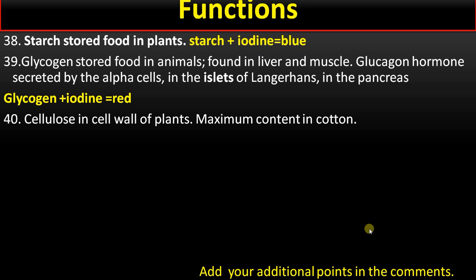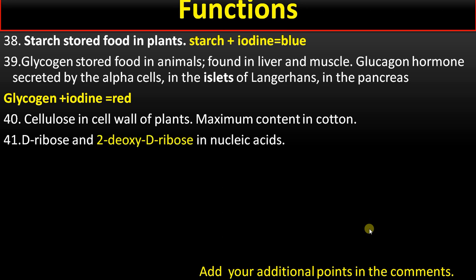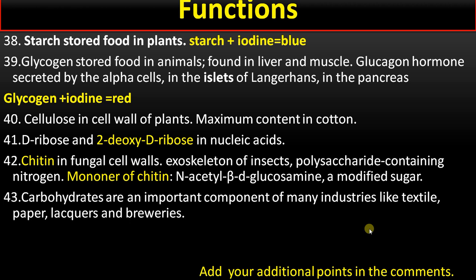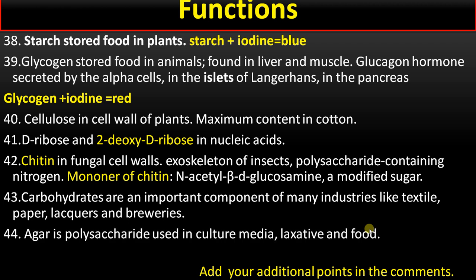Point number 40: cellulose is present in plant cell walls and is found in maximum concentration in cotton. Point number 41: D-ribose is found in RNA and 2-deoxyribose in DNA. Point number 42: chitin is a polysaccharide containing nitrogen found in fungal cell walls and the exoskeleton of insects; its monomer is N-acetylglucosamine. Point number 43: carbohydrates are important in industries like textile, paper, lacquers, and breweries. Point number 44: agar is a polysaccharide widely used in culture media, as a laxative, and as a food.